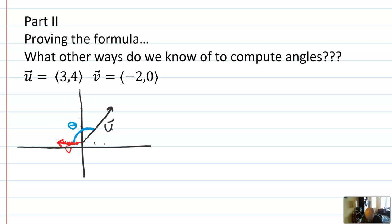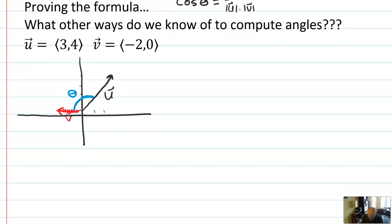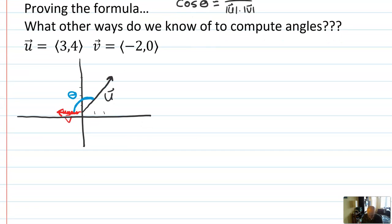Welcome back, folks. Today, we're going to talk about proving that vector angle formula that tells us that cosine theta is u dot v over magnitude of u times the magnitude of v.